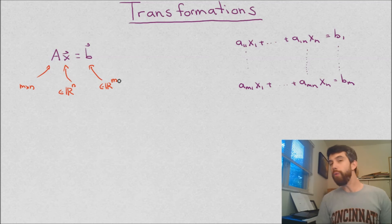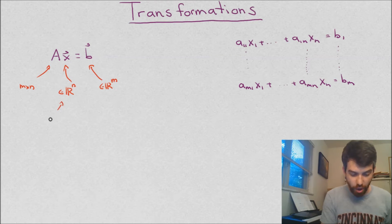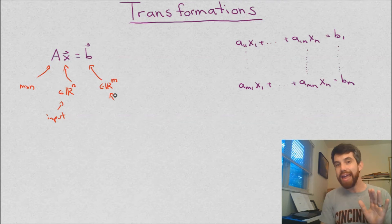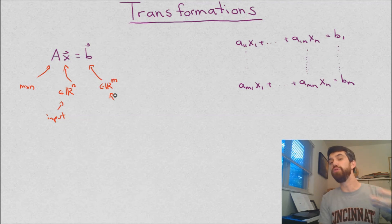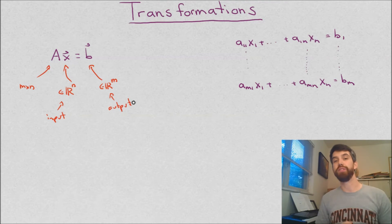So, in other words, I'm already starting to think of this as you start with an input value, that's going to be this thing in R^n, that's going to be your input. It lives in R^n, and what you get out of it after you multiply by this matrix A is going to be an output, and that output lives in R^m.